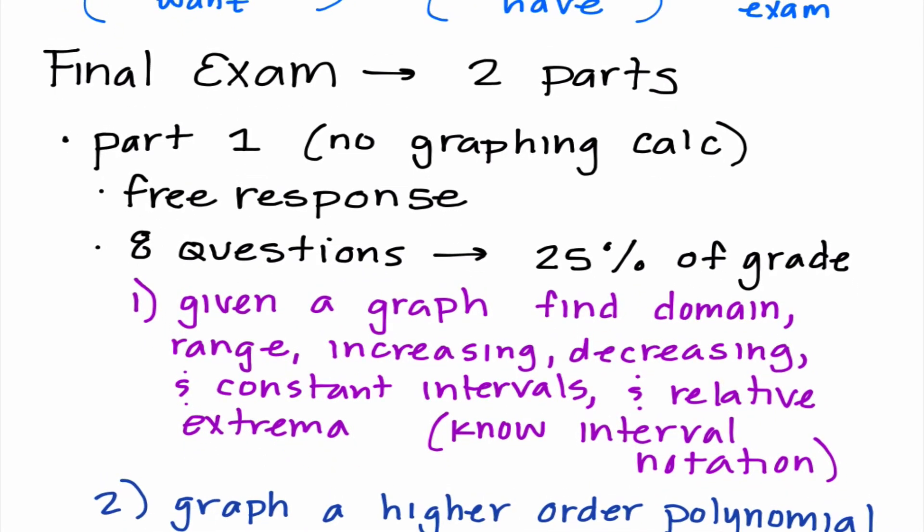The first question goes all the way back to chapter one. It's going to give you a graph, and it's going to ask you to find all these different things: find domain, range, increasing, decreasing, and constant intervals, and also relative extrema. We really haven't dealt with a lot of that stuff since the beginning of the year, so you're definitely going to want to go back and double check on that. My advice studying-wise, you should have already begun to study, but I think the best way to do it is to spread out your studying, kind of tackle one chapter a night just because it makes it more manageable. You also need to know how to use interval notation. That would be using parentheses and brackets. Remember, parentheses meant something was not included, brackets meant it was included.